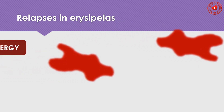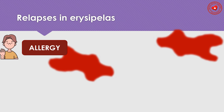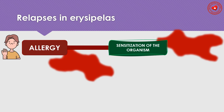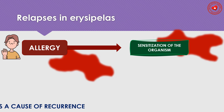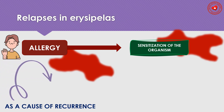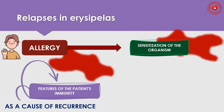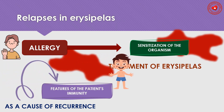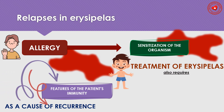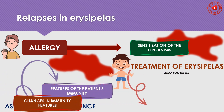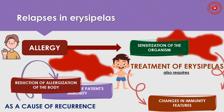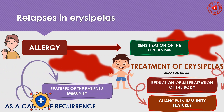Relapses in erysipelas. The basis of the recurrent course of erysipelas is allergy and associated sensitization of the body. At the same time, it is not the invasion of the microbe that comes to the fore as the cause of relapse, but the characteristics of the patient's immunity. Therefore, treatment is always supplemented by measures aimed at reducing the allergization of the body and changing the characteristics of immunity.